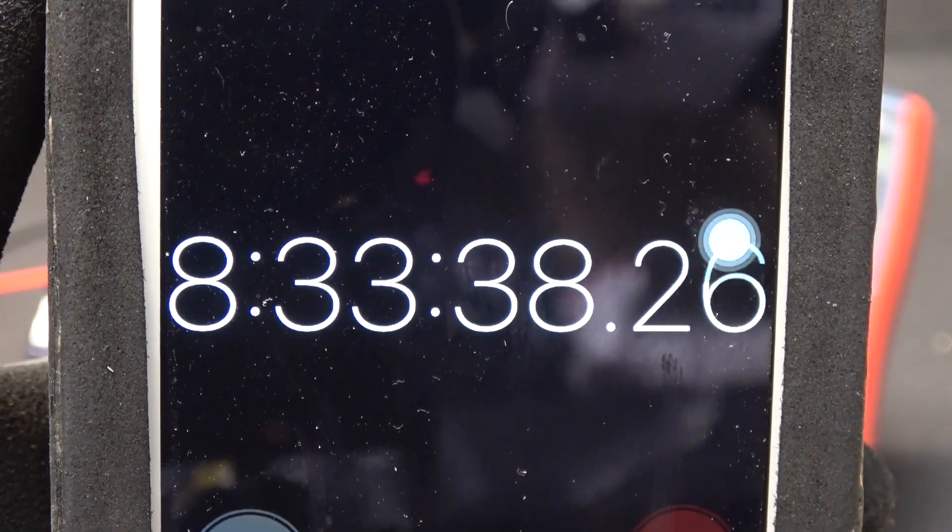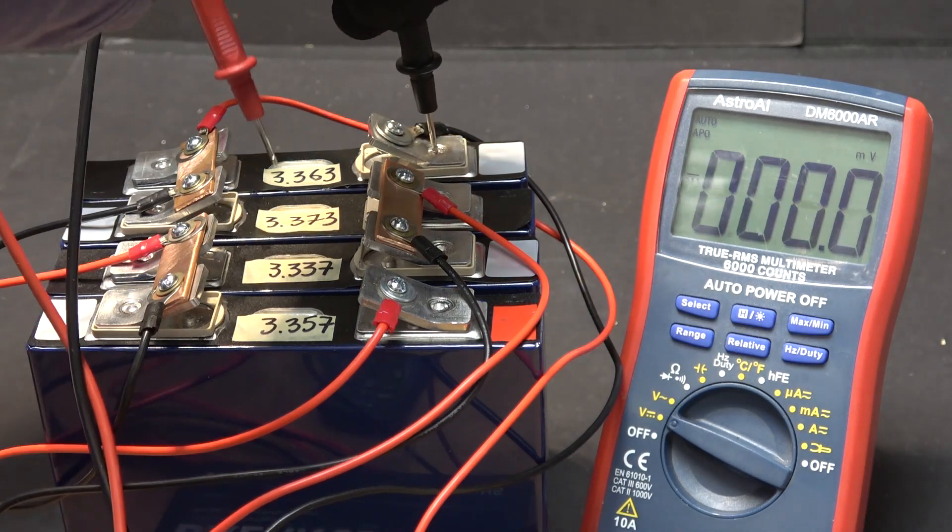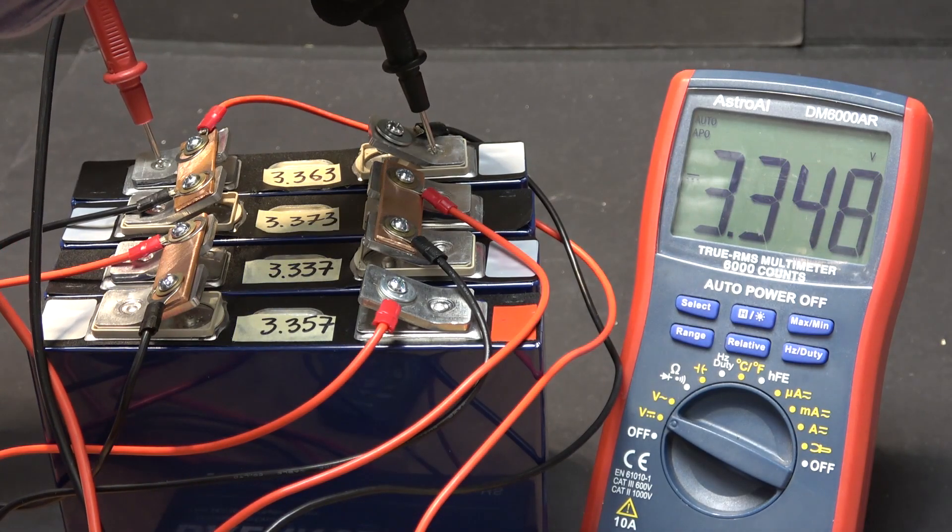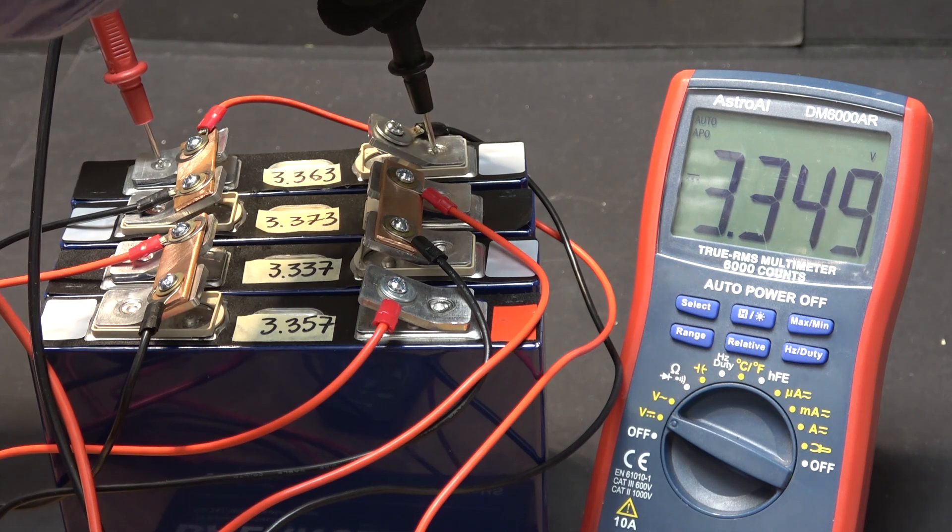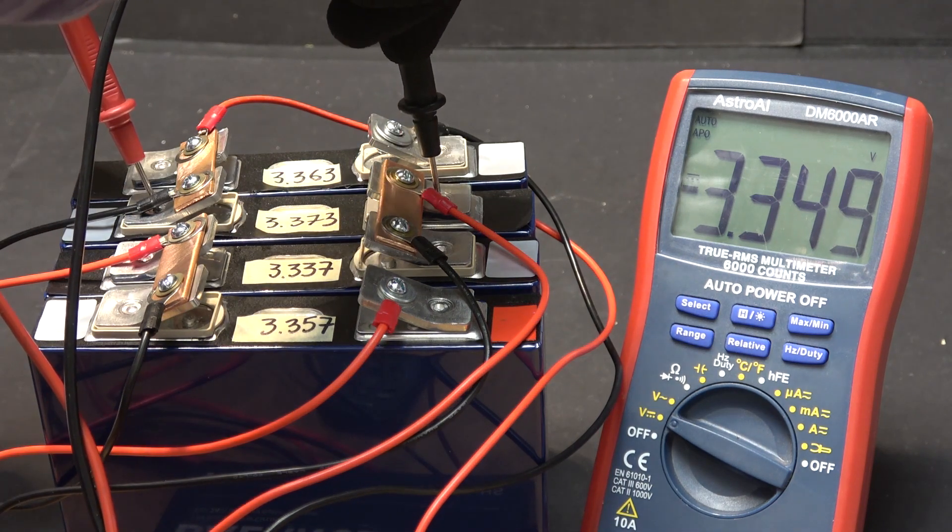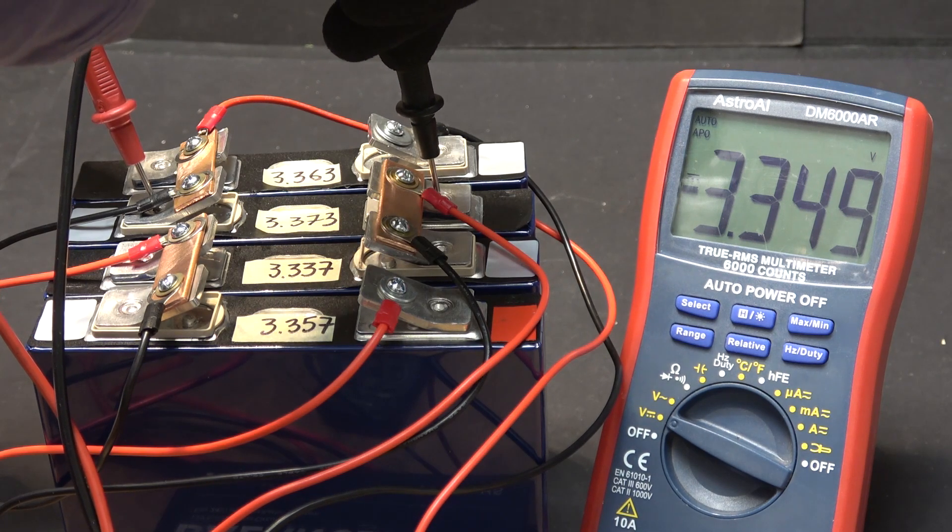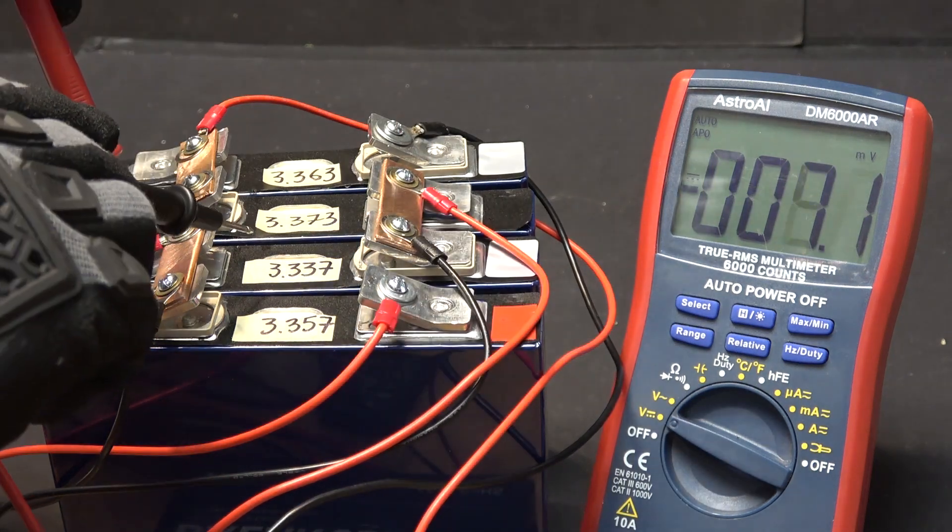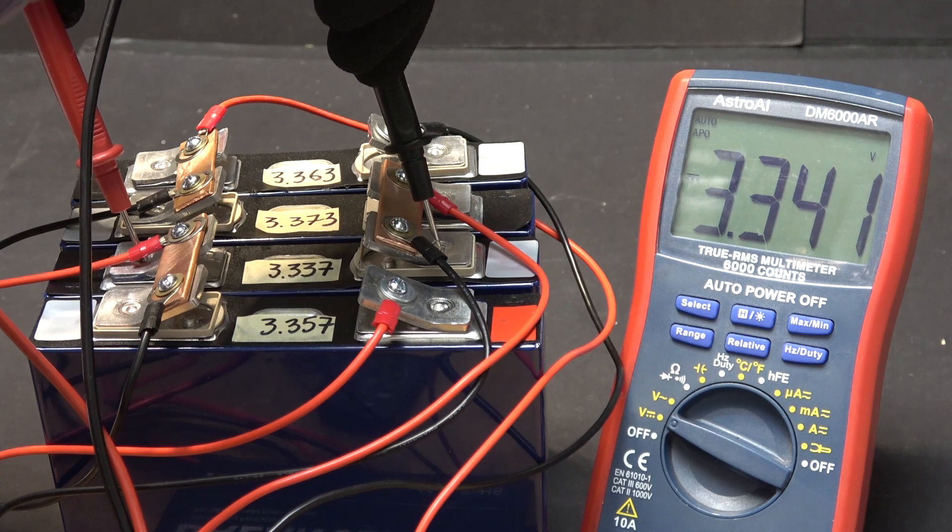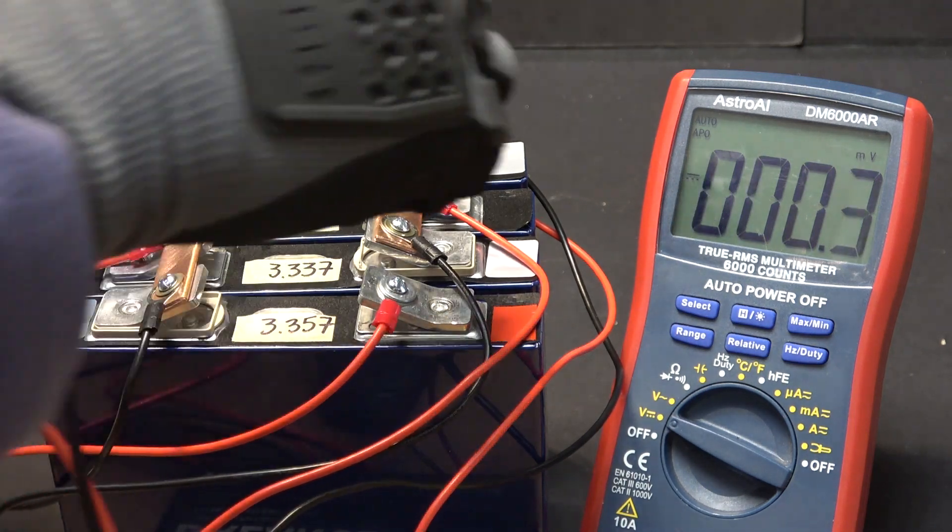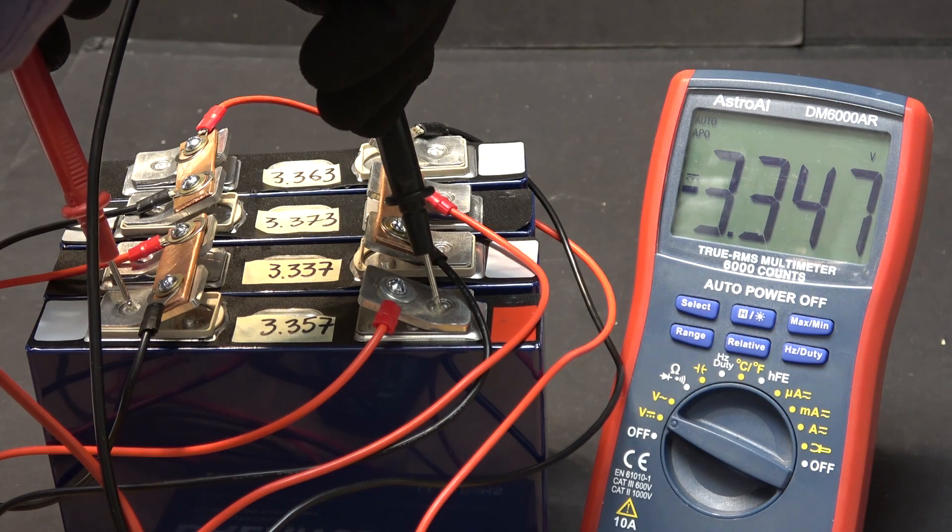It has been eight and a half hours. Let's see what we got. First cell, this one originally 3.363, now it's 3.349, so the voltage has been reduced. Originally 3.373, now it's 3.349. So this one is also reduced. Third cell, originally 3.337, now it's 3.341, so the voltage has been increased. Last one 3.357, now 3.347, so this one, the voltage has been reduced.